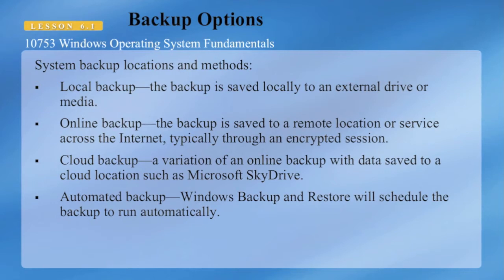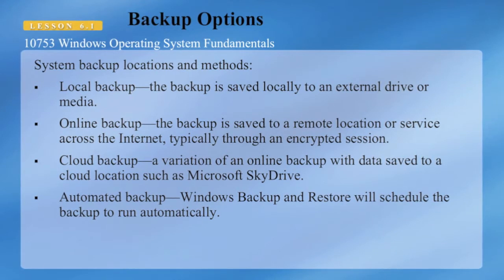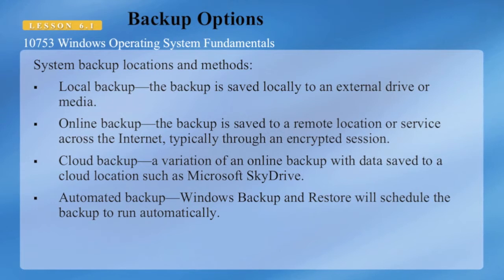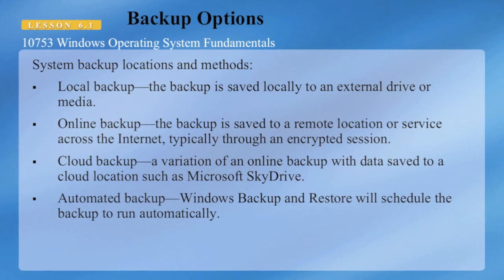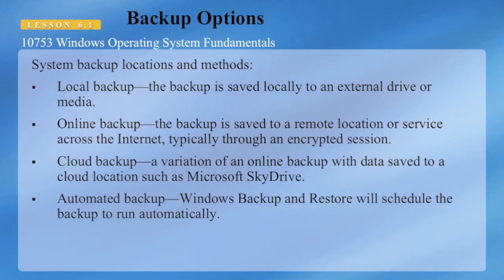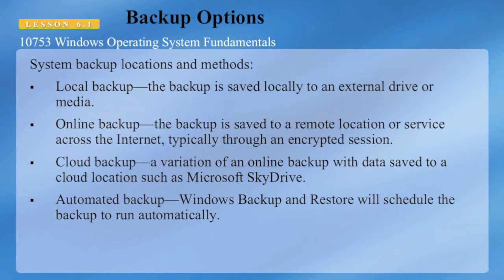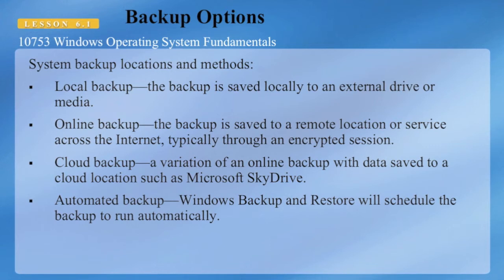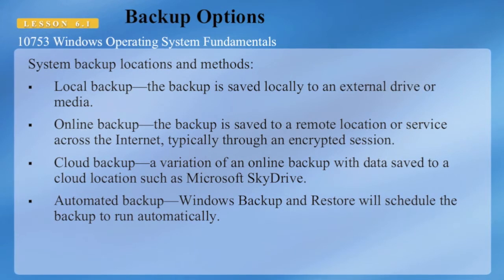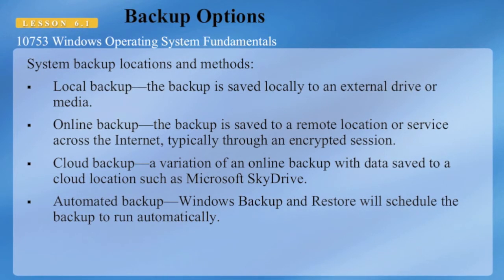Looking at system backup locations and methods: a local backup saves to an external drive or media. An online backup saves to a remote location or service across the internet, typically through an encrypted session. Cloud backup is a variation of online backup with data saved to a cloud location such as Microsoft SkyDrive. Automated backup uses Windows Backup and Restore to schedule backups to run automatically. Many third-party companies offer backup services for home and office users, and the importance of backups must be emphasized for both businesses and home users.